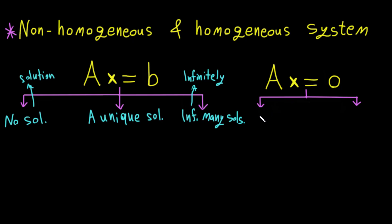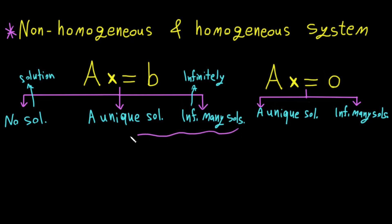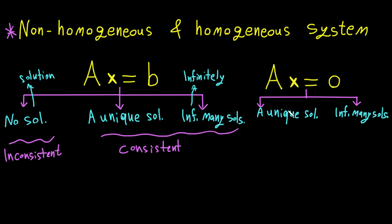So for the homogeneous system there are two possible answers. To illustrate further, these cases are called by another name: the consistent case and the inconsistent case. For the homogeneous system specifically, the unique solution is called the trivial solution.